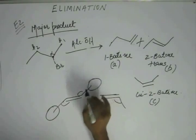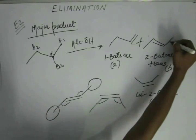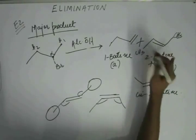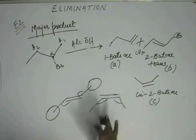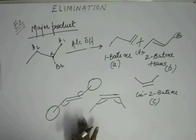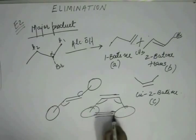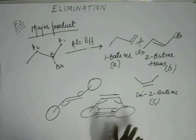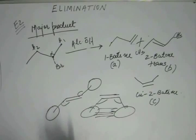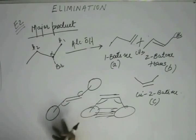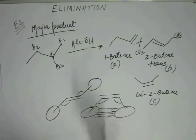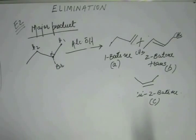Angle strain is the same, but van der Waals strain differs. In the cis form, the two CH₃ groups are on the same side and closer together, causing repulsion. In the trans form, the CH₃ groups are on opposite sides, so this repulsion is absent. Therefore, in general, the trans form is more stable than the cis form because it has less repulsion. Trans-2-butene is more stable than cis-2-butene, so the major product is B — trans-2-butene.